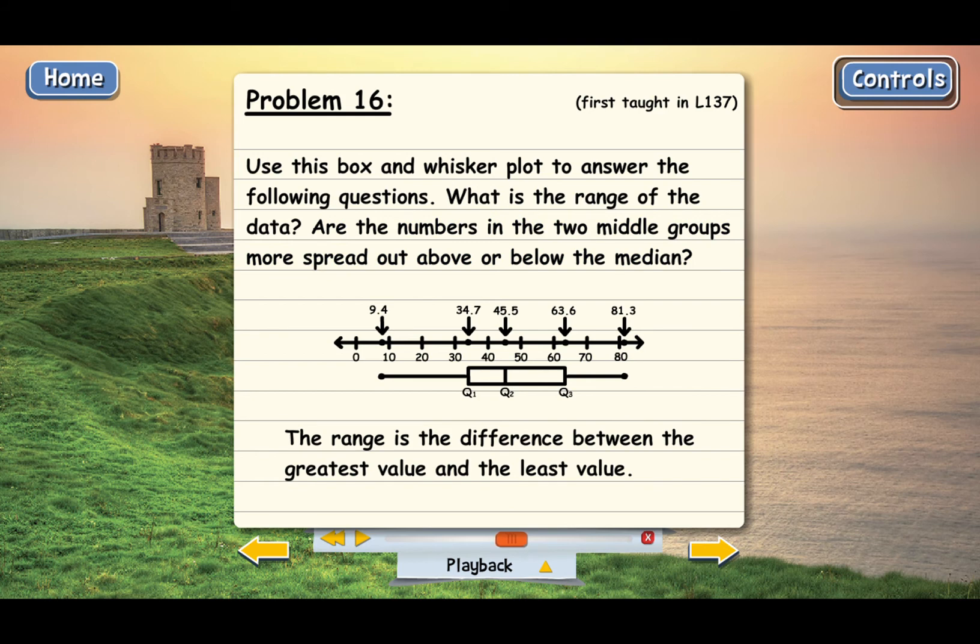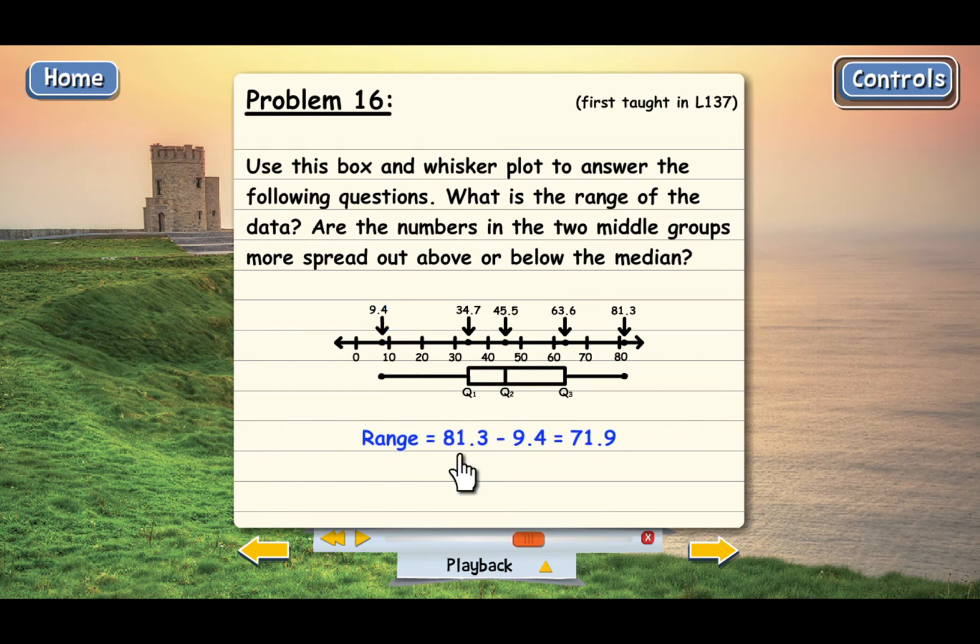Remember the range is the difference between the greatest value and the least. Well, the greatest is here at 81.3 and the least is here at 9.4. So the range is 81.3 minus 9.4 which is 71.9.